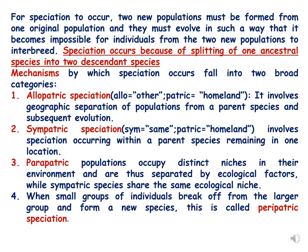Sympatric speciation involves stopping interbreeding of individuals because, although they are living in the same area, they develop genetic polymorphism differentiation from the original population. So sympatric speciation occurs within a parent species remaining in one location. Parapatric speciation is another type where populations occupy distinct niches in their environment and are separated by ecological factors, while sympatric species share the same ecological niches.